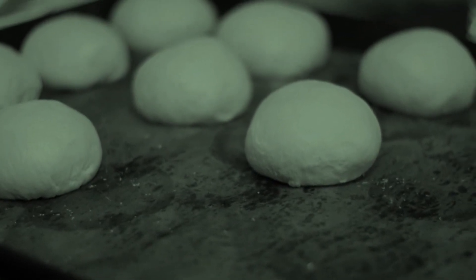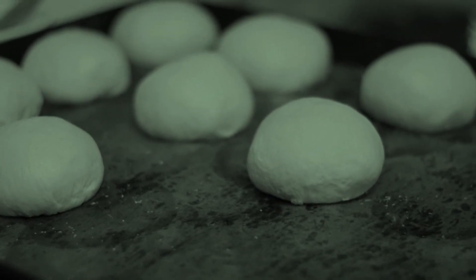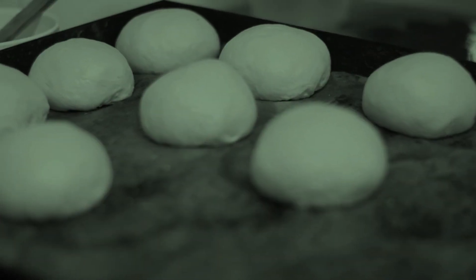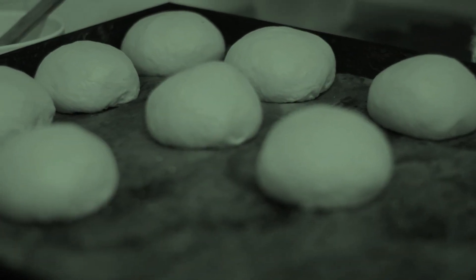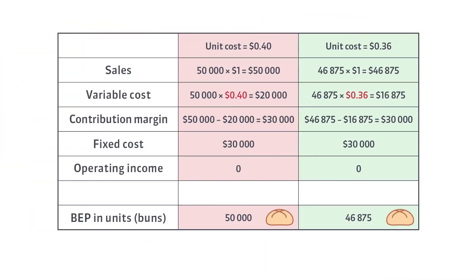Let's take a closer look at this, assuming that fixed cost is $30,000. In this case, the bakery may sell 3,125 fewer buns to breakeven.